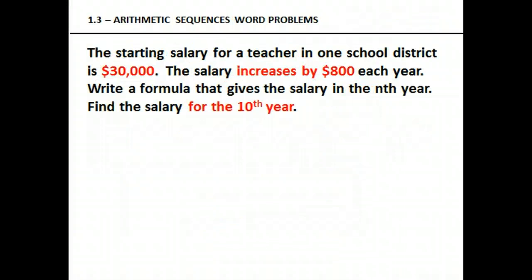This one is a little bit different, and I'm going to take it step by step. The starting salary for a teacher in one school district is $30,000. The salary increases by $800 each year. First, write a formula that gives the salary in the nth year, and then find the salary for the 10th year. Our starting salary is $30,000, pertinent information. It's going to increase by $800, pertinent information.